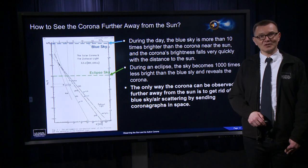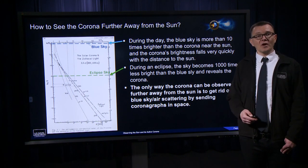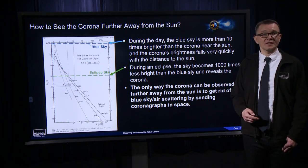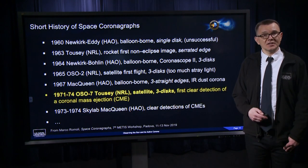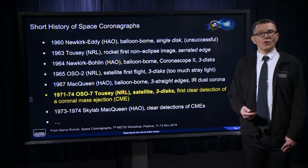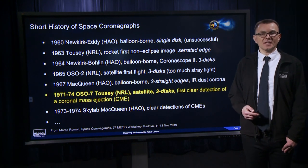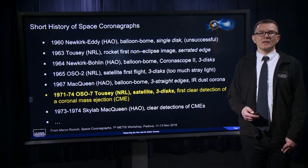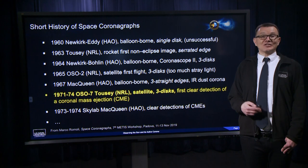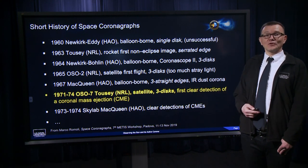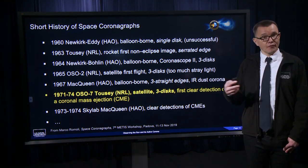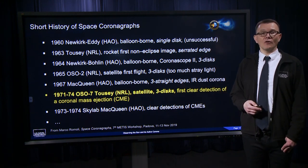The only way the corona can be observed further away from the sun is to eliminate the blue sky or air scattering, and this is done by sending coronagraphs into space. This was done in the 1960s, first using balloon-borne platforms or sounding rockets, and then with satellites after 1965. Making coronagraphs is not easy — scientists had to wait until the 1970s, a full decade, to finally identify a coronal mass ejection propagating further than just a few fractions of a solar disk distance.